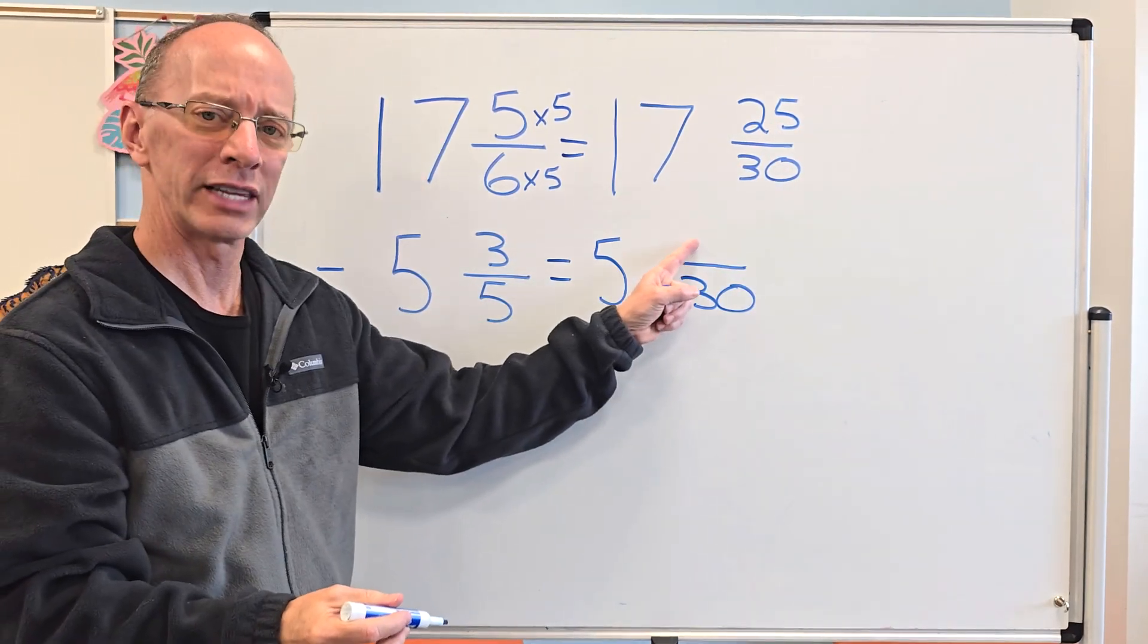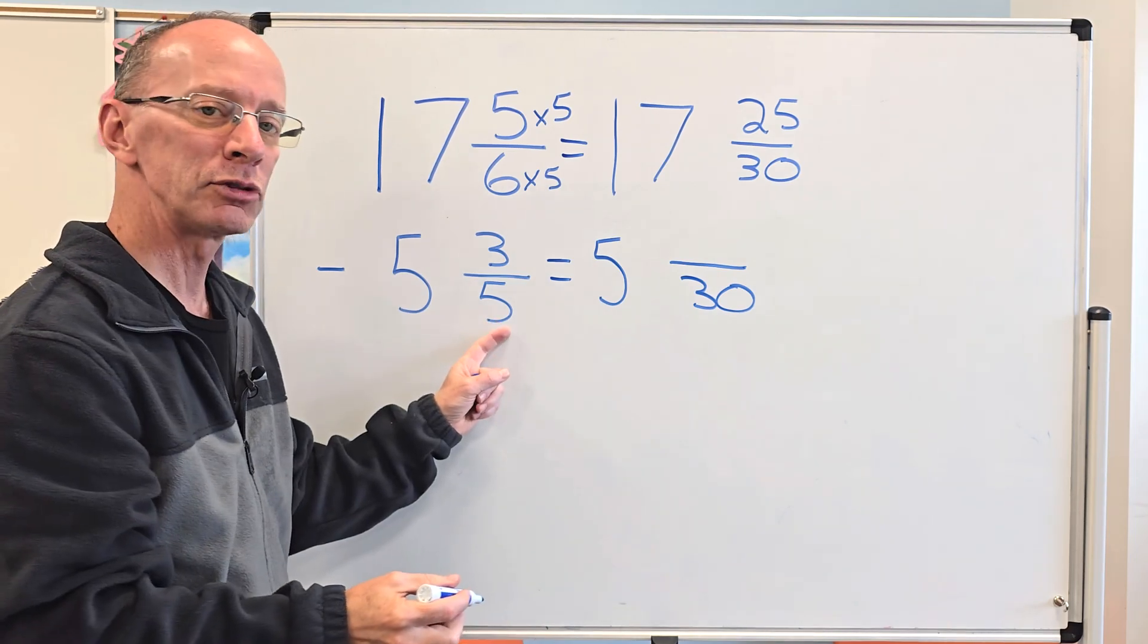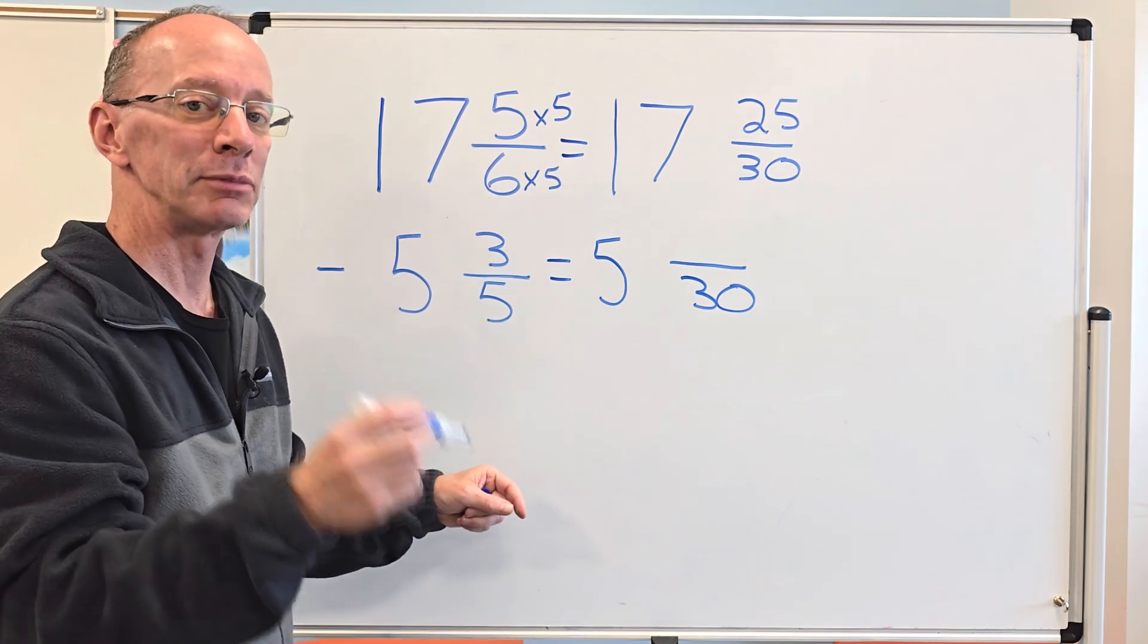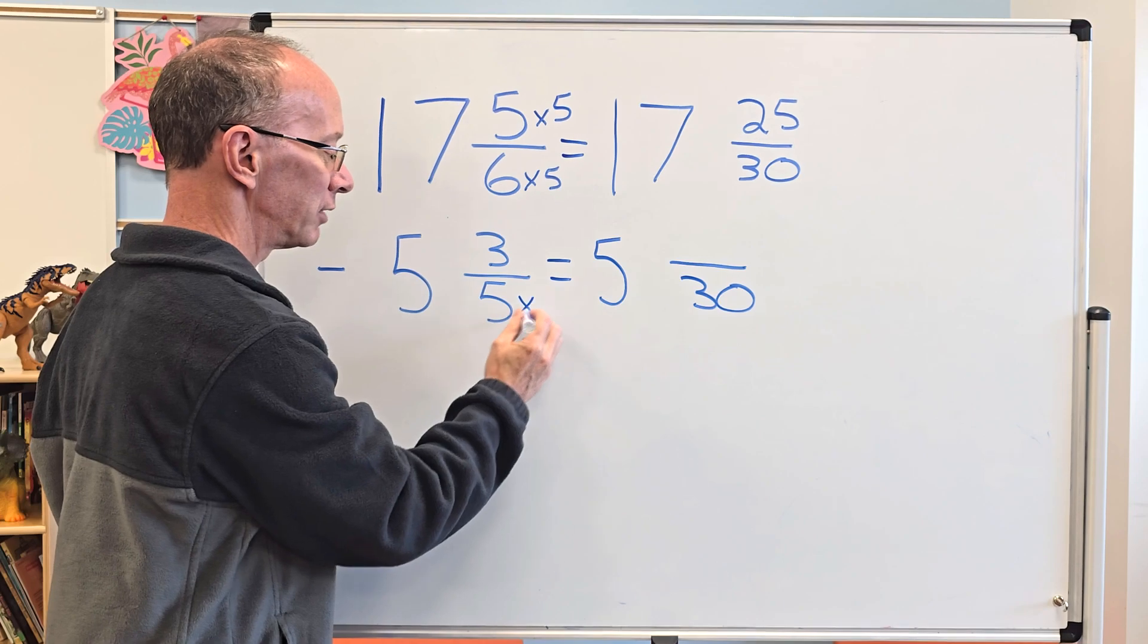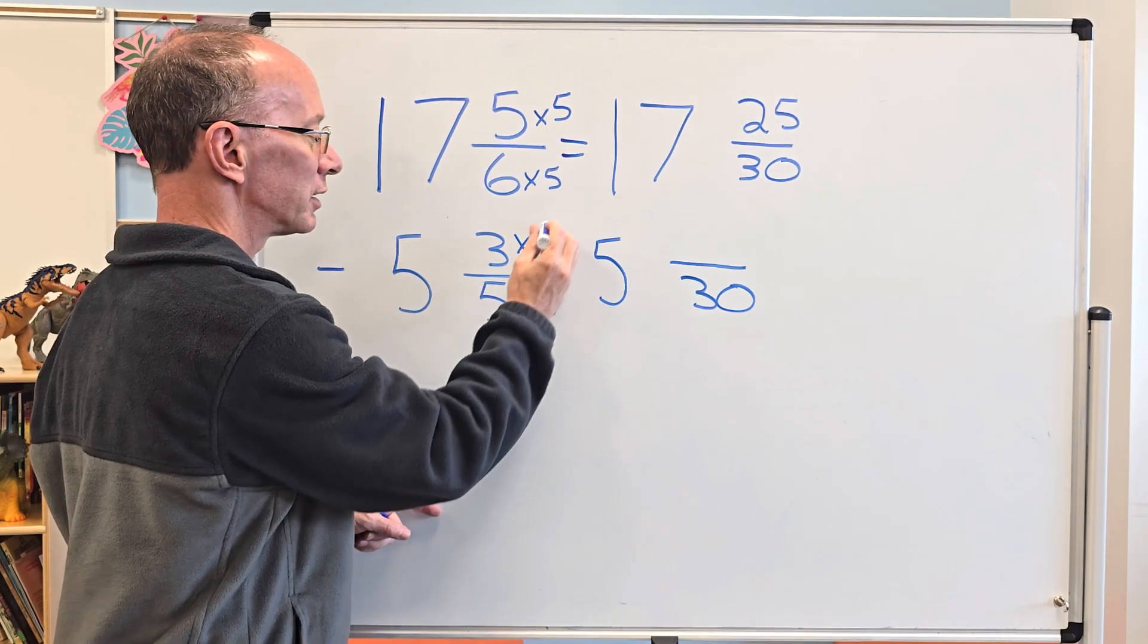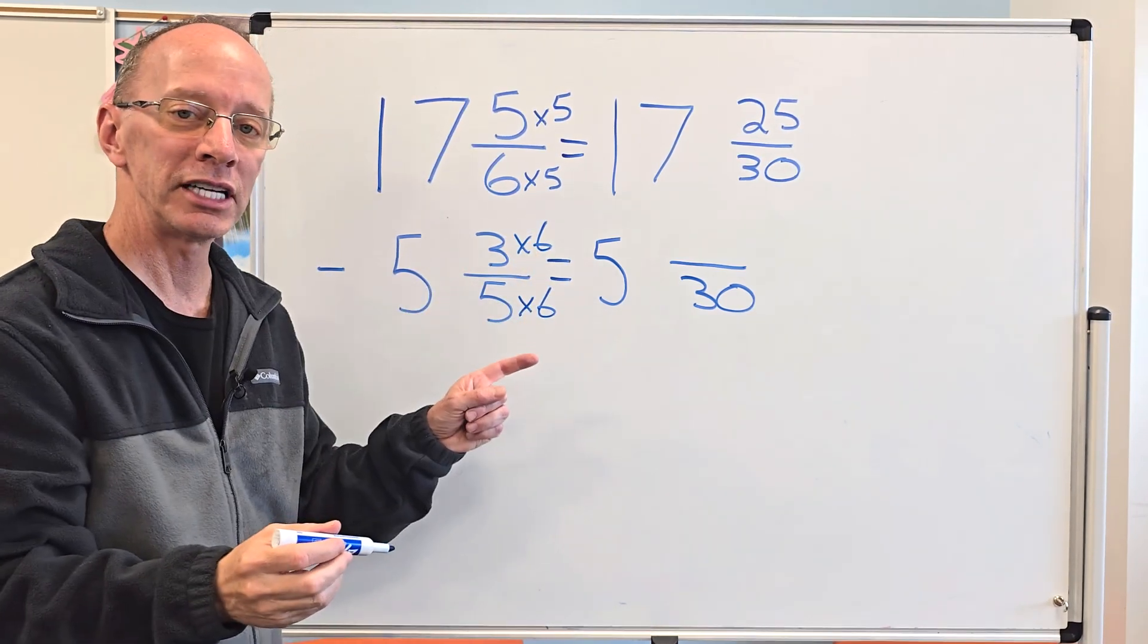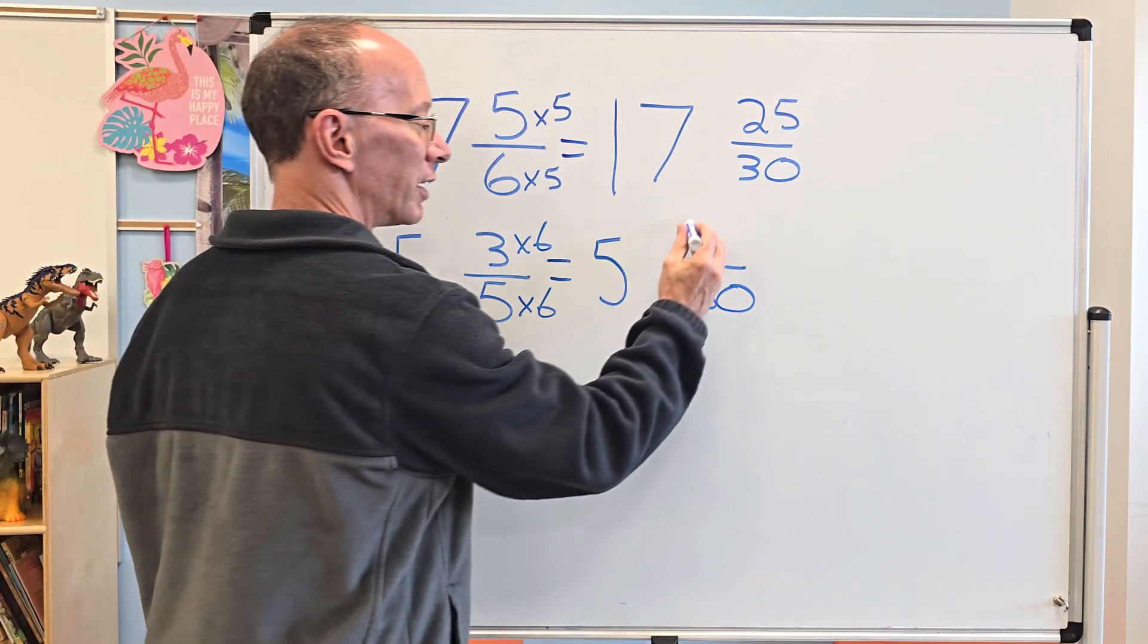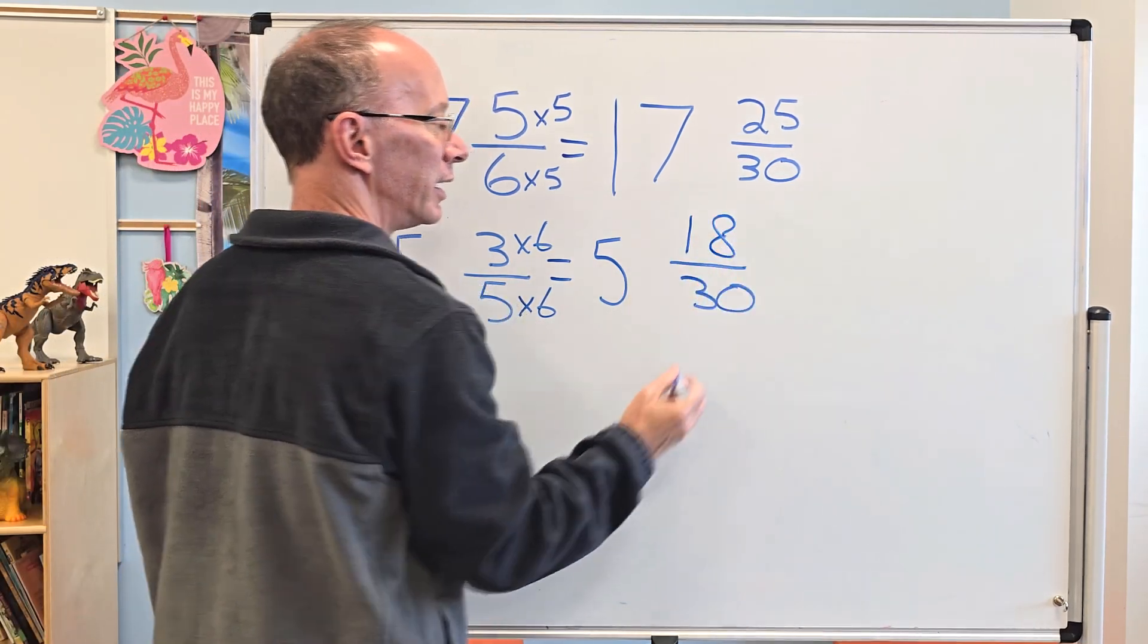Let's work on this one right now. 5 times what equals 30? 5 times 6 equals 30. So 5 times 6 here, times 6 here. 3 times 6 equals 18, so I put 18 right here.